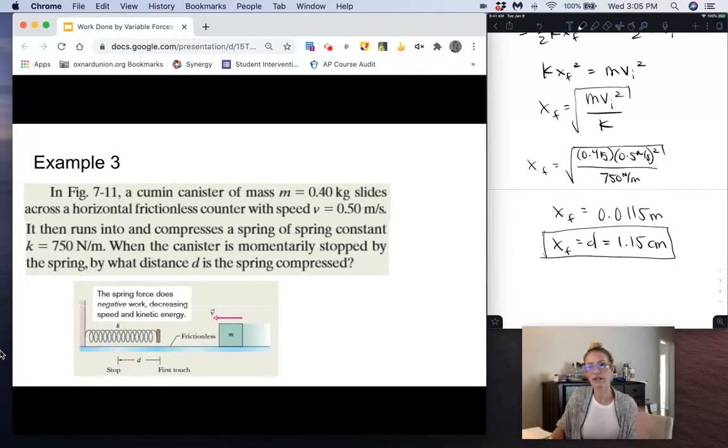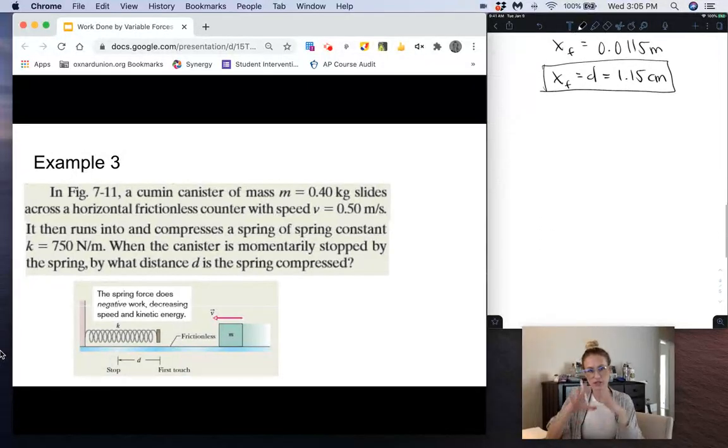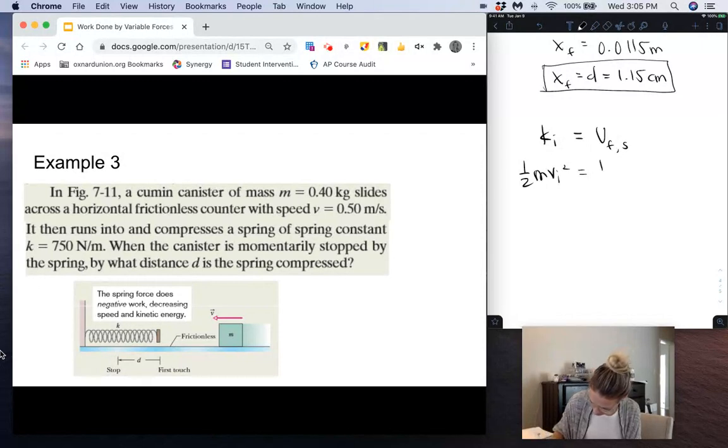Now one note here, if you use conservation of energy, you actually end up getting the same equation. So if we used conservation of energy and we treated this whole thing like a system, we have initial kinetic energy to start with, k initial, and then we're ending with potential energy because that spring gets compressed. So we have potential energy final, and that's spring potential energy, elastic potential energy. So that is one-half m v initial squared equals one-half k x final squared.